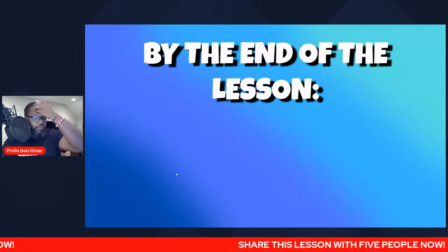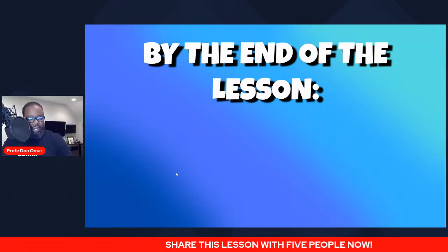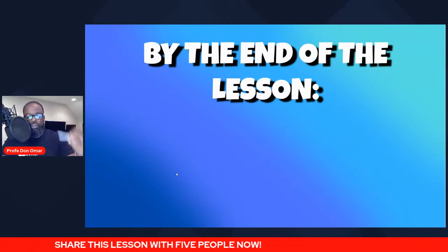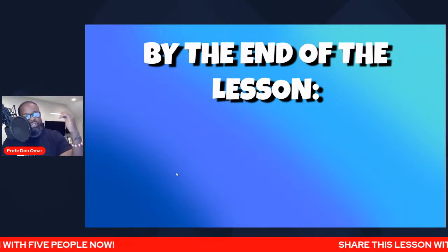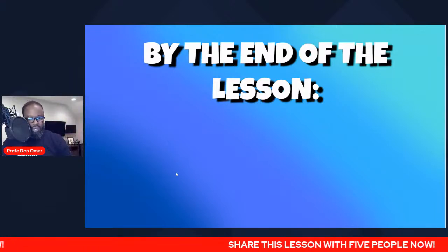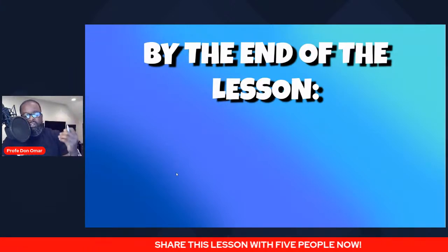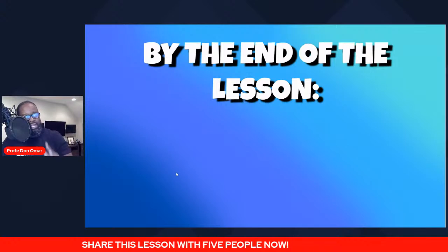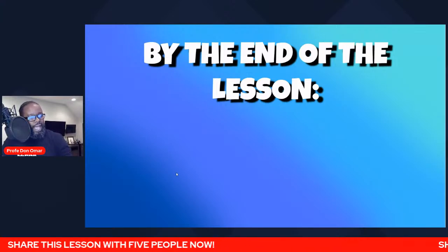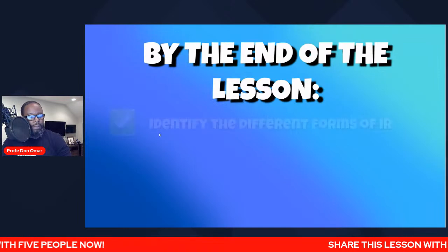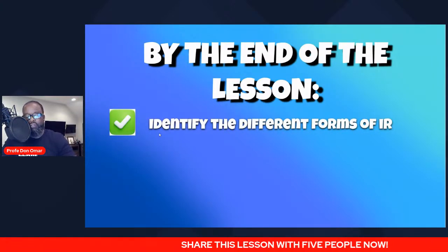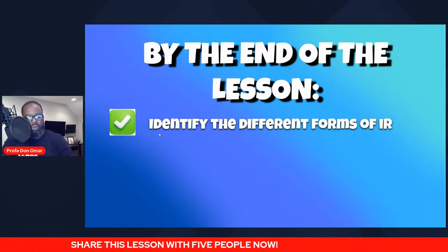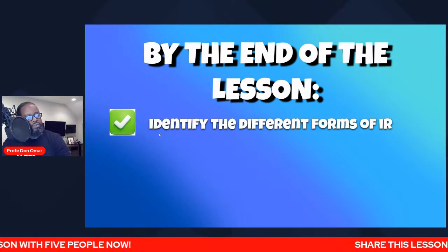This is a checklist for tonight's lesson. By the end of this lesson, I want you to be able to answer three questions — ask yourself: can I do the following? If you can affirmatively say yes, you have definitely learned what we did today. La primera cosa, the first thing: identify the different forms of the verb ir. Can you do that?